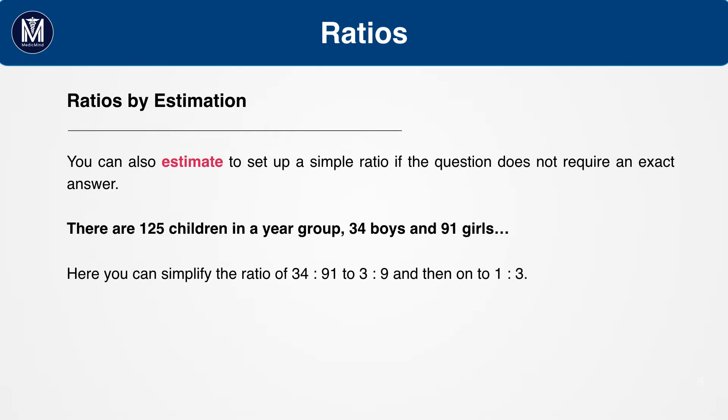You can also estimate and round numbers to help set up a simple ratio. For example, there are 1 to 5 children in a year group, 34 boys and 91 girls. Here, you can simplify the ratio of 34 to 91 to 3 to 9, and then onto 1 to 3.